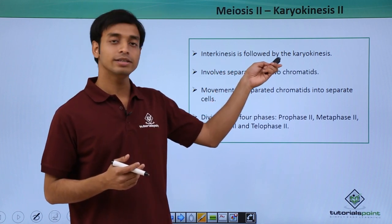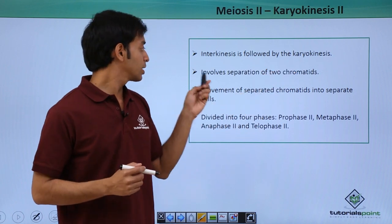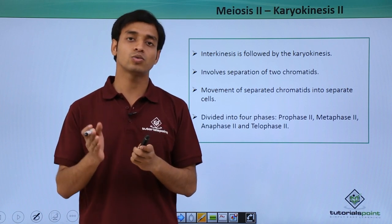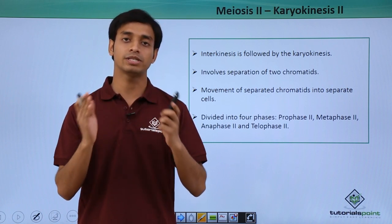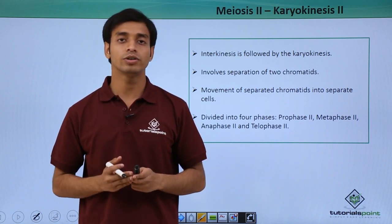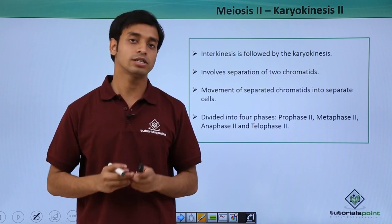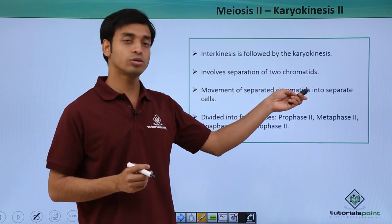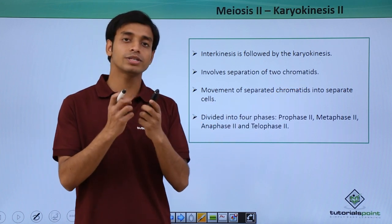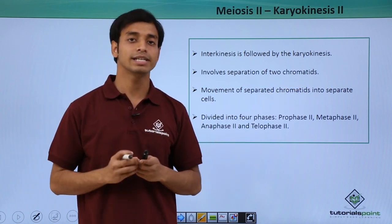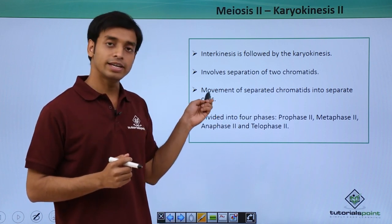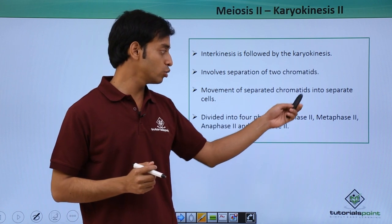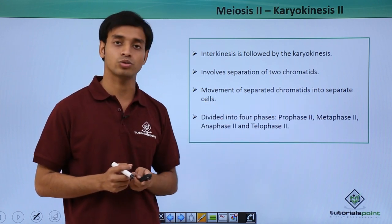Karyokinesis 2 involves the separation of two chromatids. We have seen in Meiosis 1 that the homologous pairs were separated — now this is going to involve the separation of the sister chromatids and the movement of separated chromosomes into separate cells. This phase of Karyokinesis is divided into four phases: Prophase 2, Metaphase 2, Anaphase 2, and Telophase 2.